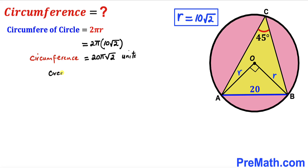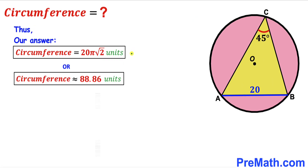The circumference of this circle is approximately equal to 88.86 units. So after all the calculations, the circumference of this circle turns out to be 20π√2 units, which is approximately equal to 88.86 units. That's our final answer. Thanks for watching and please don't forget to subscribe to my channel for more exciting videos.